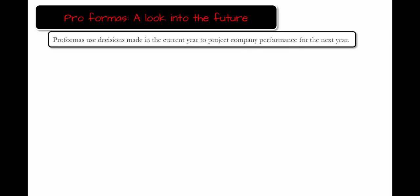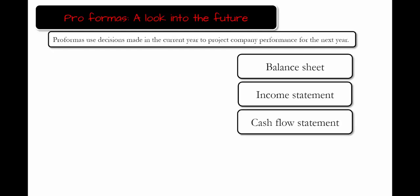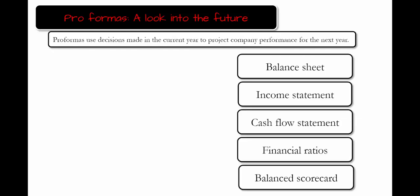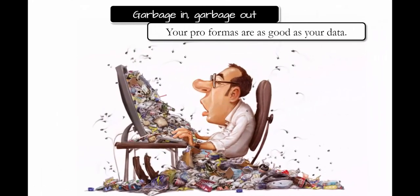The simulation provides several performance projectors. These use decisions made in the current year to project company performance for the next year. The following are available: the balance sheet, the income statement, the cash flow statement, financial ratios, and the balanced scorecard. They show what the next year would look like given the decisions you have currently made, and analyzing them is critical for company success.